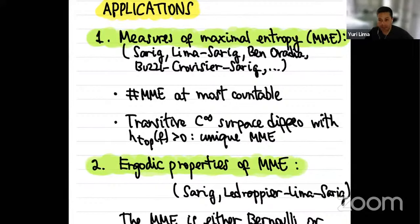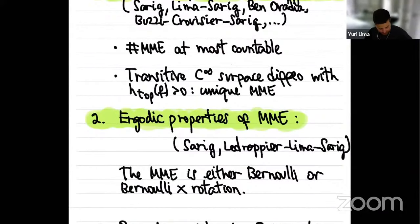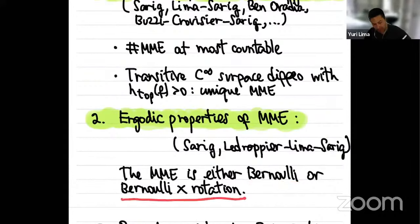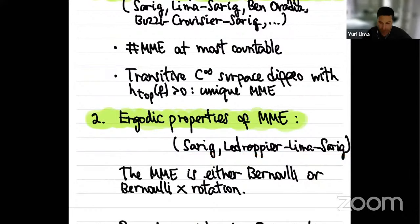We can also say many things about the ergodic properties of such measures. The measure is going to be hyperbolic in low dimension, and we can prove it is either Bernoulli or Bernoulli times a rotation, both in the diffeomorphism and in the flow situation. There are also extensions for higher dimensions.